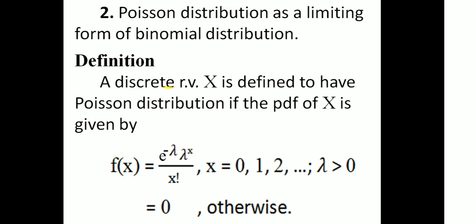A discrete random variable X is defined to have a Poisson Distribution if the probability density function of X is given by f(x) = e raised to minus lambda, multiplied by lambda raised to x, divided by x factorial, where x = 0, 1, 2, 3, etc., and lambda is greater than 0; otherwise 0.